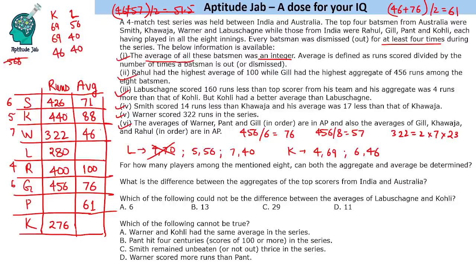The first question asks: for how many players among the 8 can both aggregate and average be determined? The answer is 5 players — Rahul, Gil, Warner, Pant, Smith, and Khwaja — for whom we can determine both total runs and average. The second question asks for the difference between the aggregates of the top scorers from India and Australia: India's top scorer Gil has 456, Australia's top scorer Khwaja has 440, so the difference is 16.